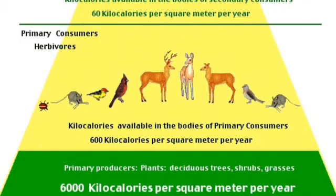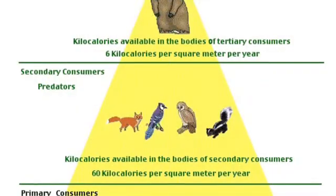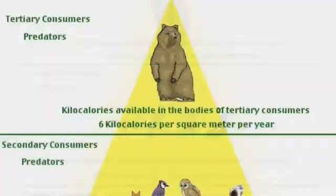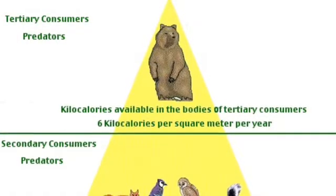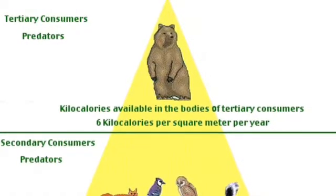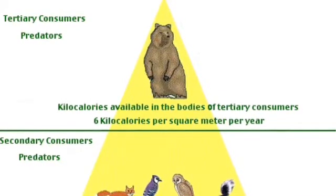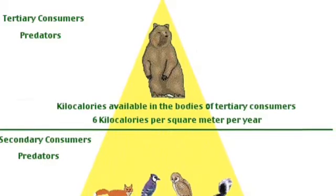This is a food pyramid of a taiga ecosystem. On the very bottom are the primary producers, which are the plants. The next section up is the primary consumers, which are the herbivores. The next section includes the secondary consumers, which are the predators. At the very top are the tertiary consumers, which are also predators. Only 10% of the energy is passed on to the very top level of animals.